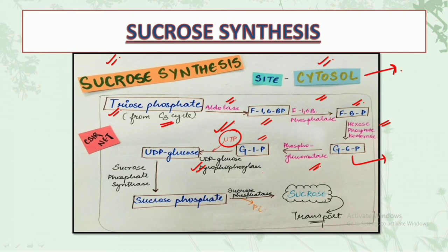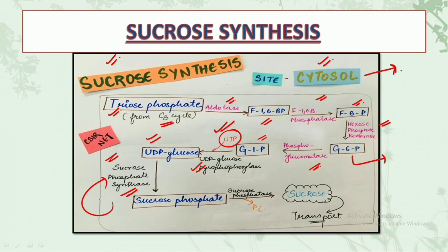UTP (uridine triphosphate) and the enzyme UDP glucose pyrophosphorylase cause the conversion of glucose 1-phosphate into UDP glucose (uridine diphosphate glucose). Then UDP glucose gets converted into sucrose phosphate by the enzyme sucrose phosphate synthase. Finally, sucrose phosphate is converted into sucrose in the presence of the enzyme sucrose phosphatase by elimination of phosphate. This sucrose is then ready for the transport mechanism.